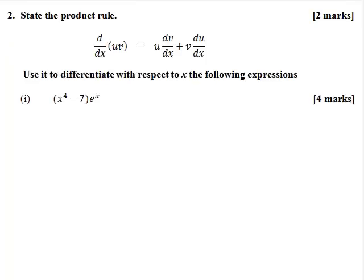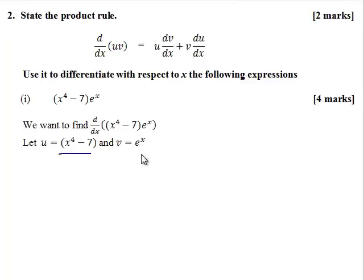Use this to differentiate x to the 4 minus 7 brackets e to the x. So we'll let u equal x to the 4 minus 7 and v equal e to the x. So the differential of this is going to be 4x cubed and the differential of this is going to be e to the x.